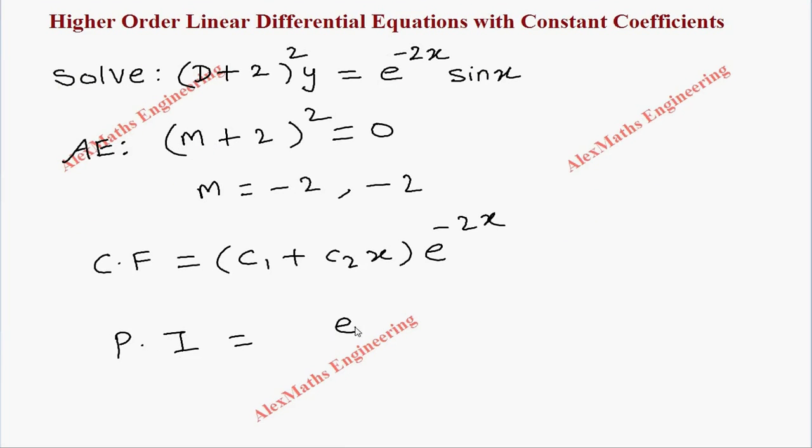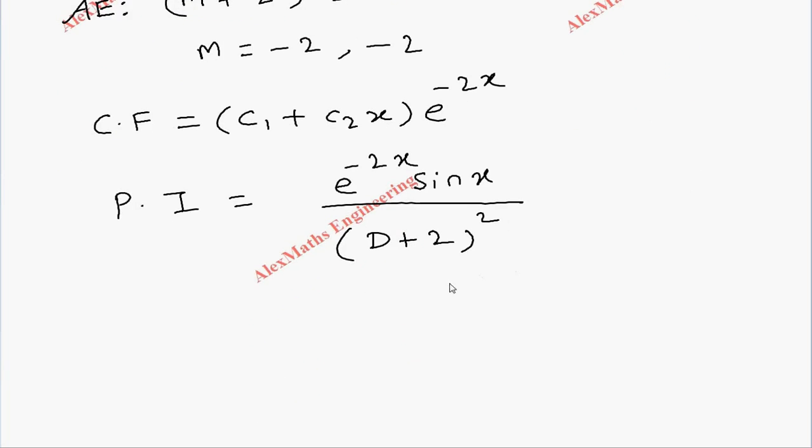Then coming to the particular integral, we have to write e^(-2x) sin(x) divided by (D+2)². Now by procedure, D is replaced as D-2. The value of a here is -2.